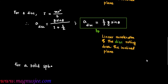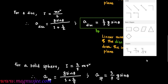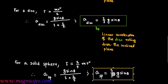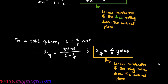For a solid sphere, the moment of inertia I = (2/5)·MR². Therefore, the linear acceleration of the solid sphere rolling down the incline plane is: A_sphere = g·sinθ / (1 + 2/5) = (5/7)·g·sinθ.